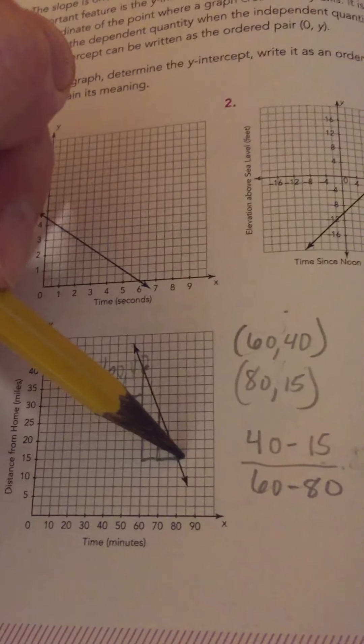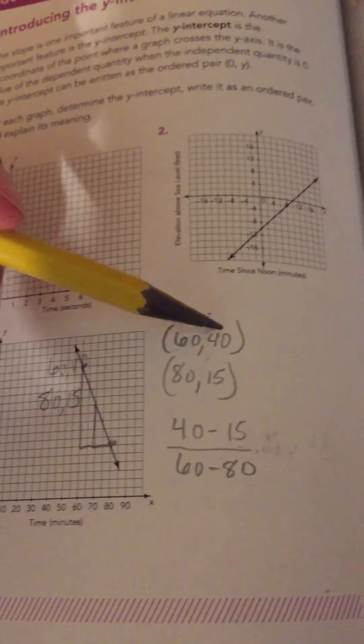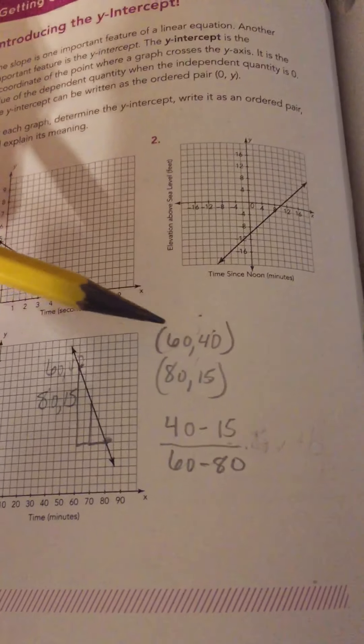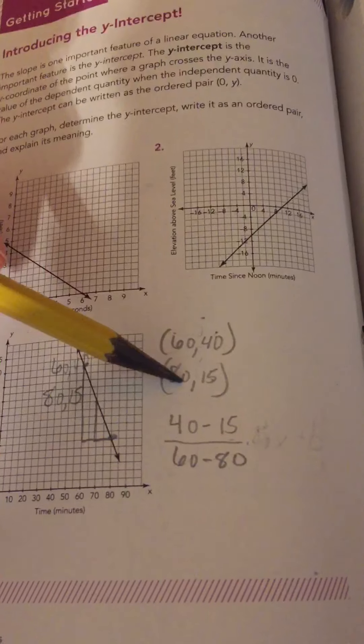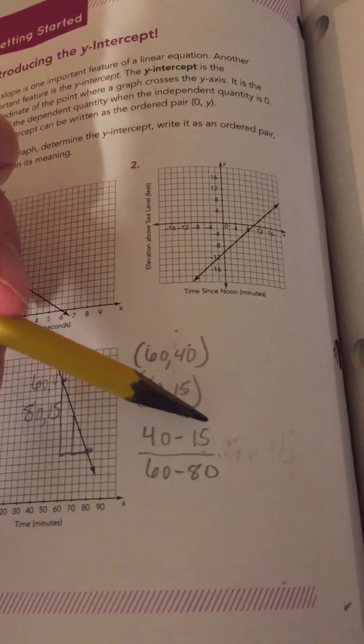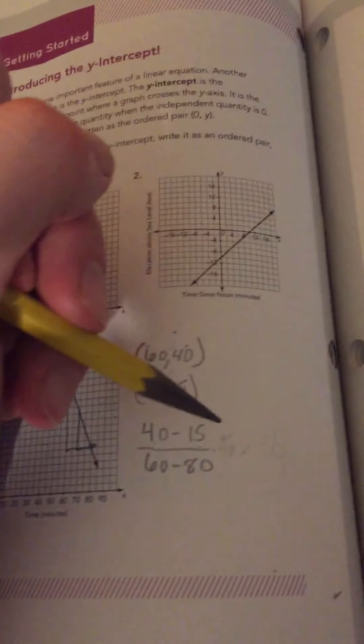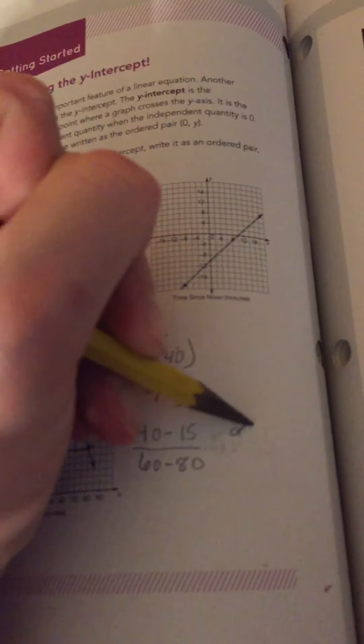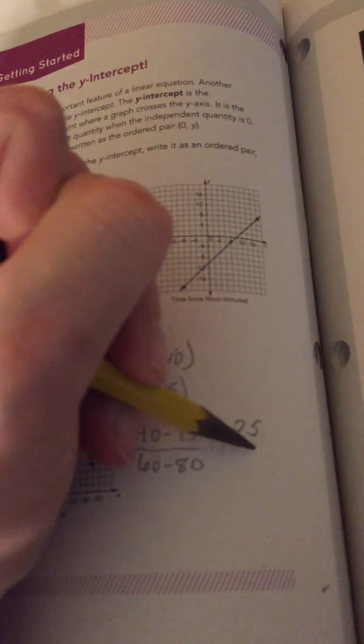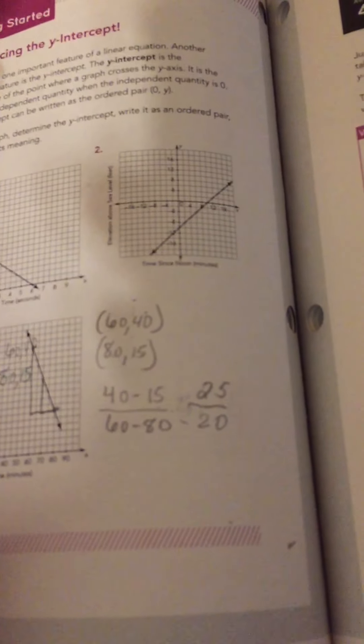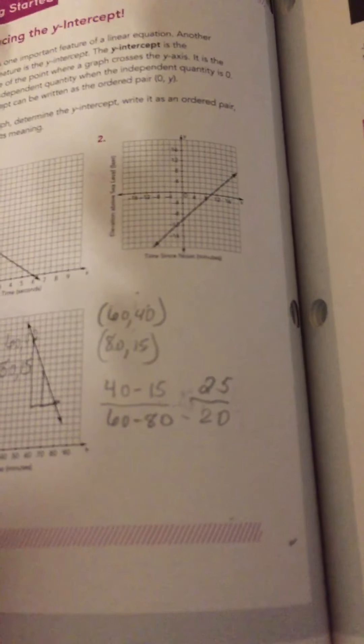So, I used those and I did my y2 minus y1 over x2 minus x1. So, 40 minus 15 is 25 and 60 minus 80 is negative 20. So, this is negative 5 fourths or negative 1 and 1 fourth.